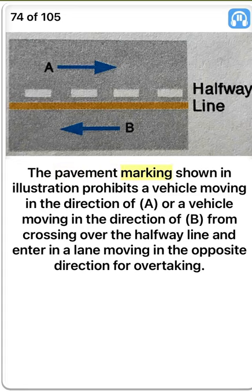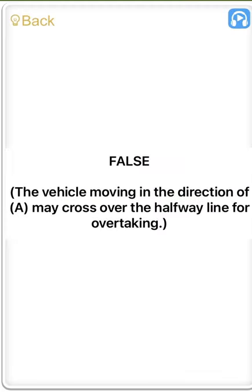The pavement marking shown in the illustration prohibits a vehicle moving in the direction of A, or a vehicle moving in the direction of B, from crossing over the halfway line and entering a lane moving in the opposite direction for overtaking. False. The vehicle moving in the direction of A may cross over the halfway line for overtaking.